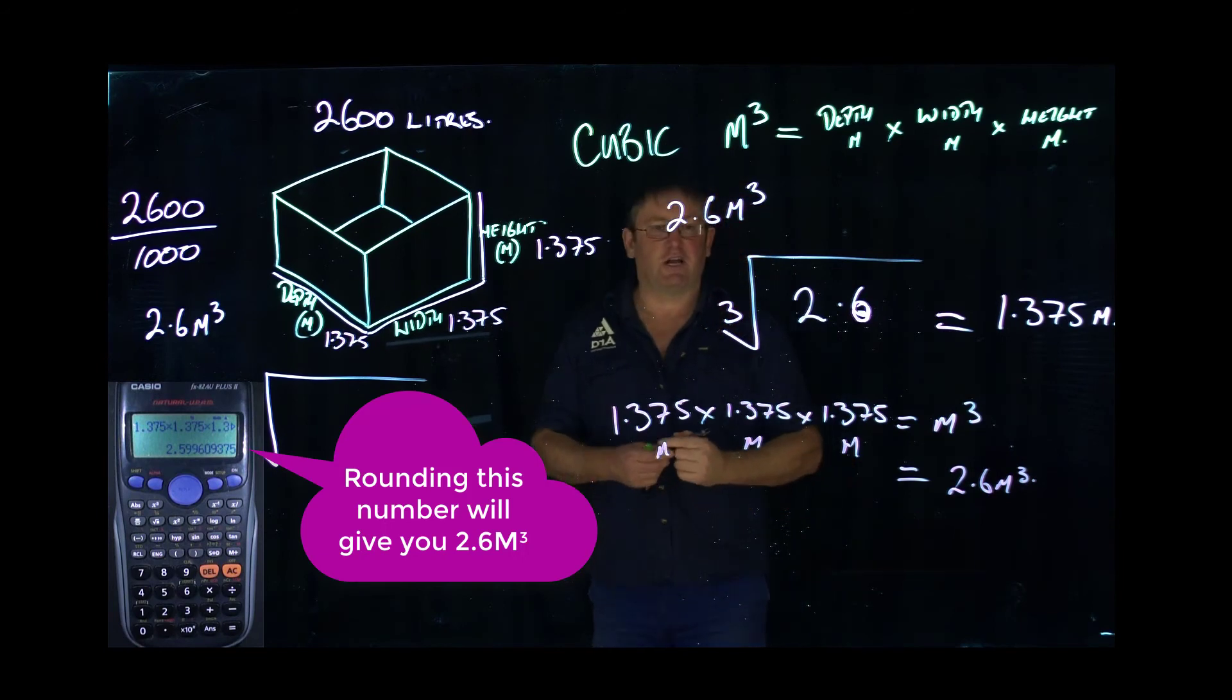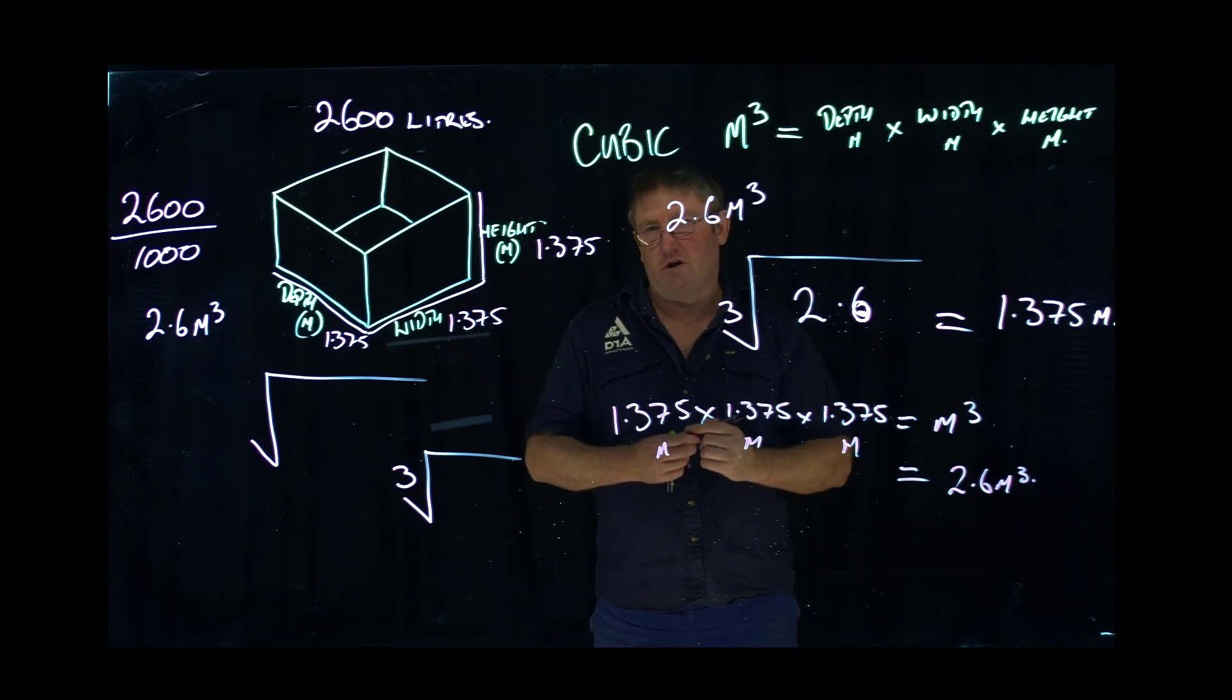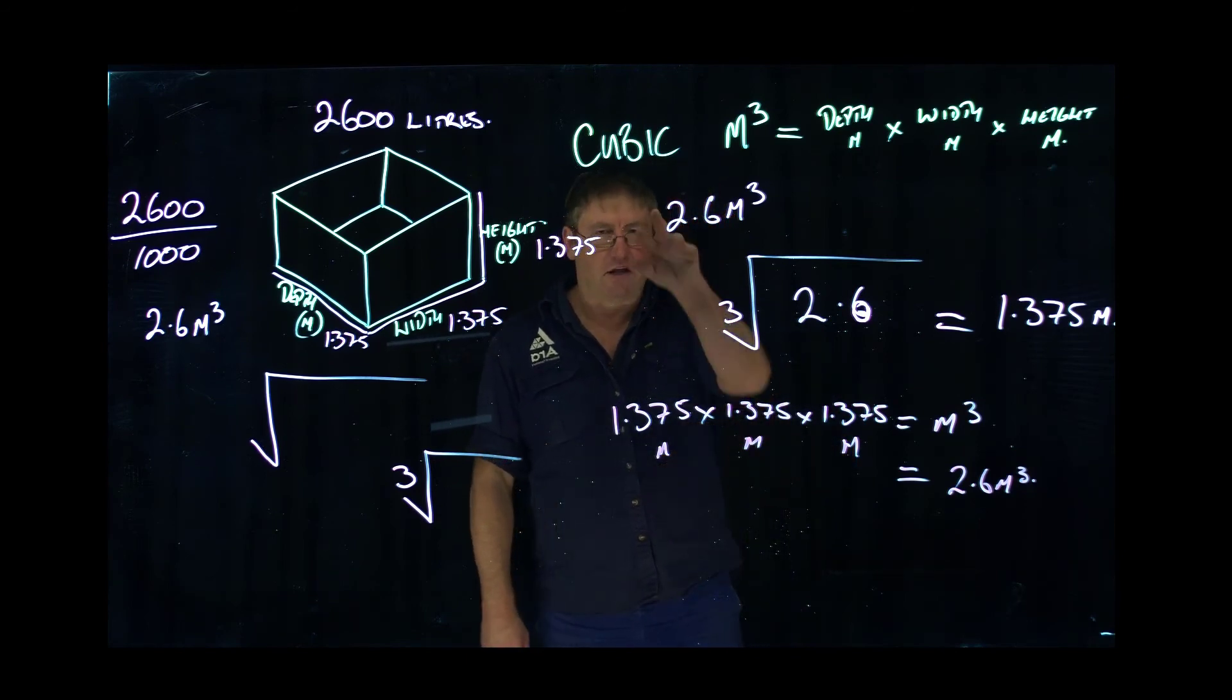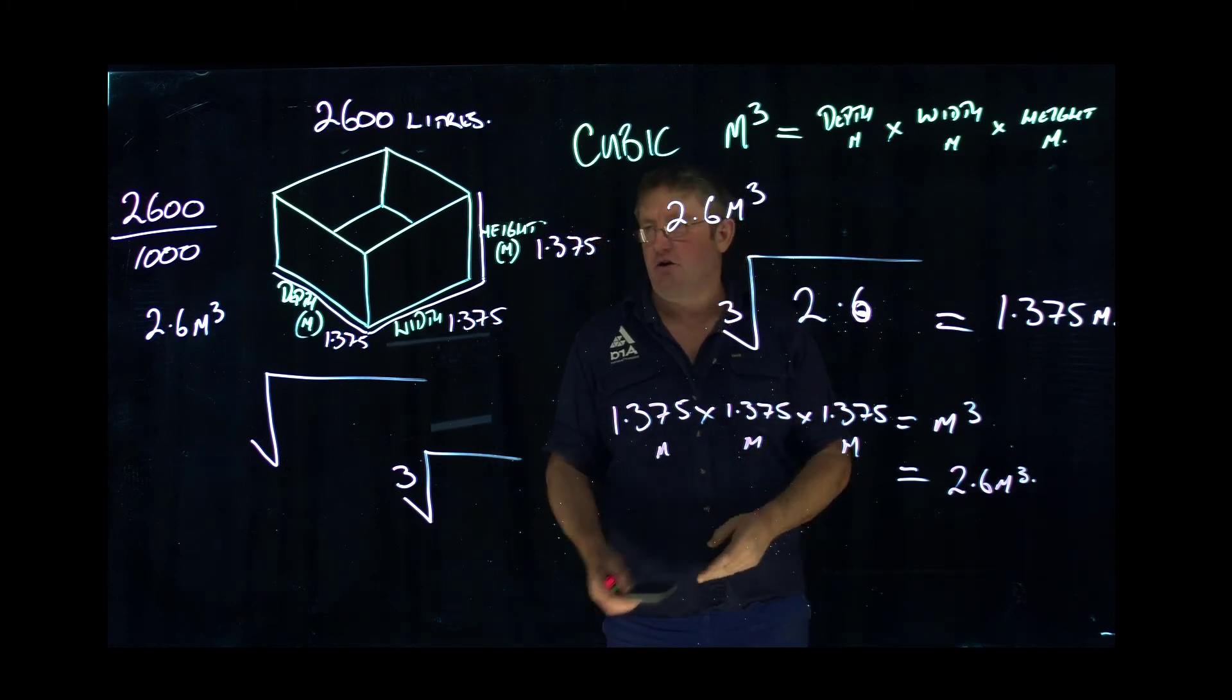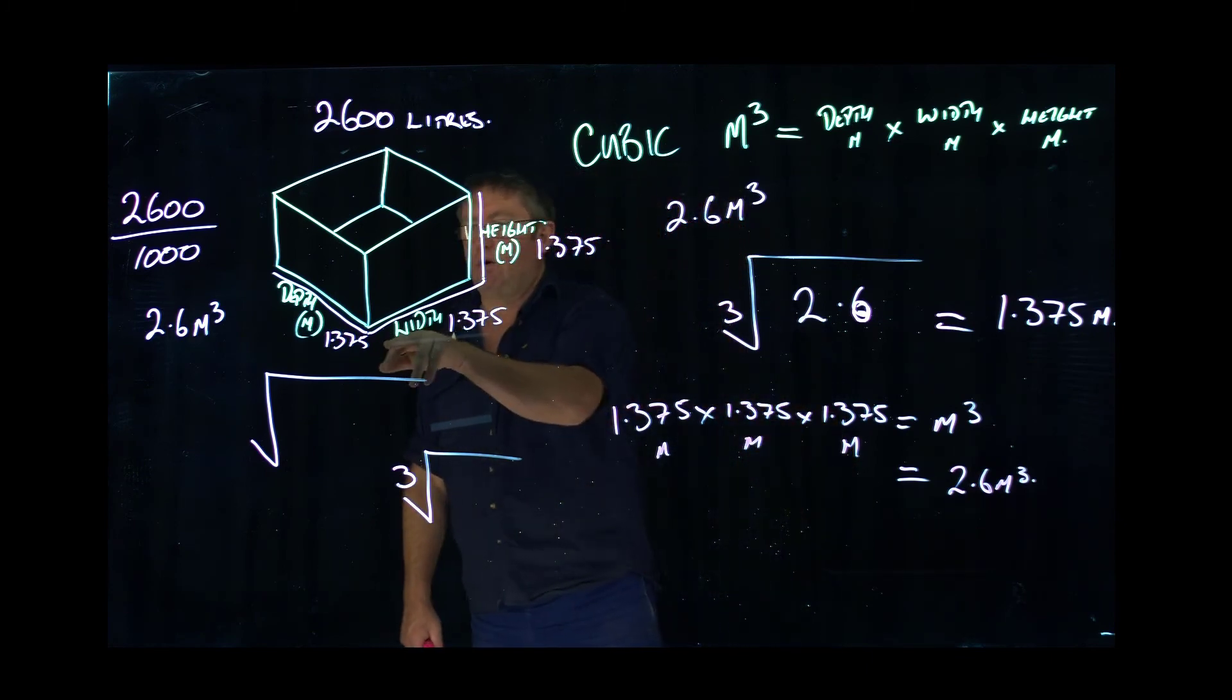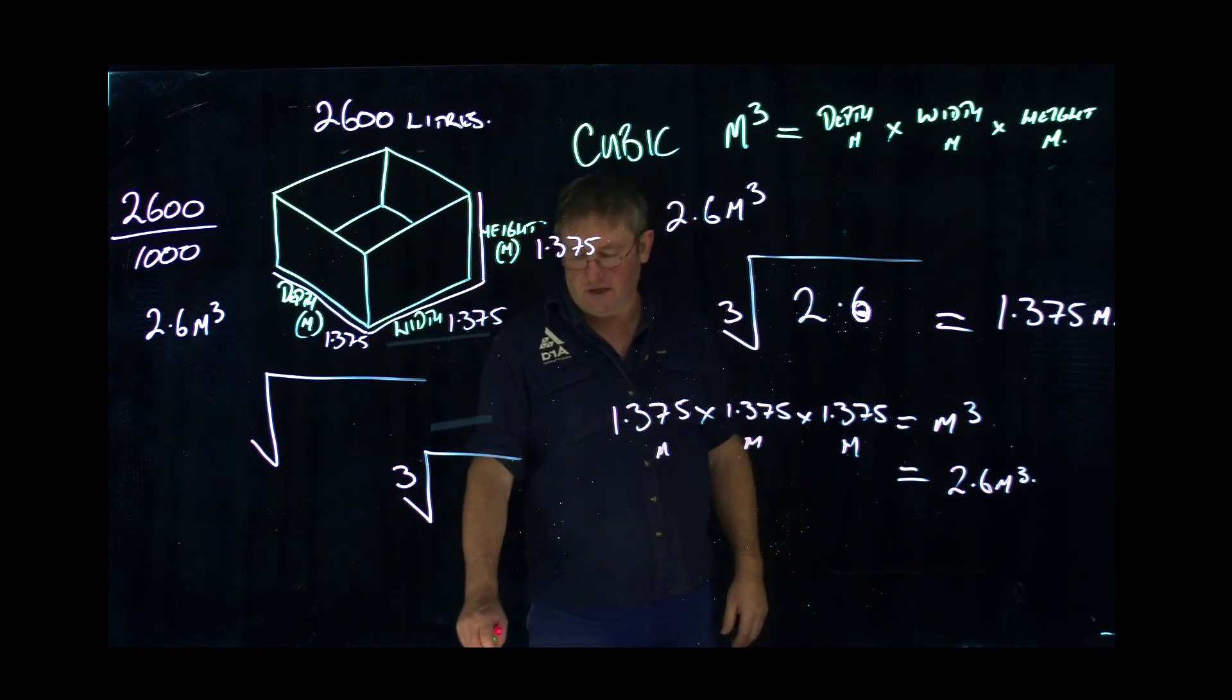So that's how you can get a cube root, simply by using the cube root function on your calculator. I think you've got to push shift or inverse to pick up that cube root function, but that's how you can actually determine exactly equal lengths on a tank if that's what you're trying to work out. Thank you.